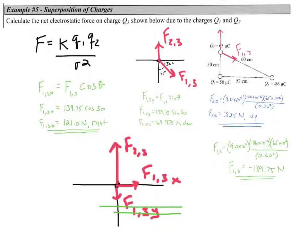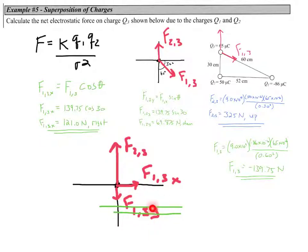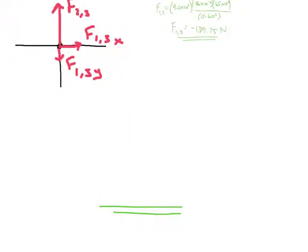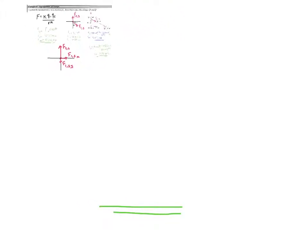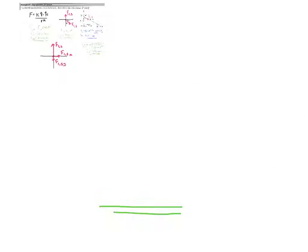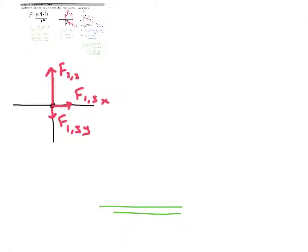Redrawing our free body diagram: we have force two on three at 325 newtons upward, force one on three in the x-direction at 121 newtons to the right, and force one on three in the y-direction at 69.875 newtons downward. Now we add all forces in the x-direction and all forces in the y-direction, then use the Pythagorean theorem to find the resultant force.